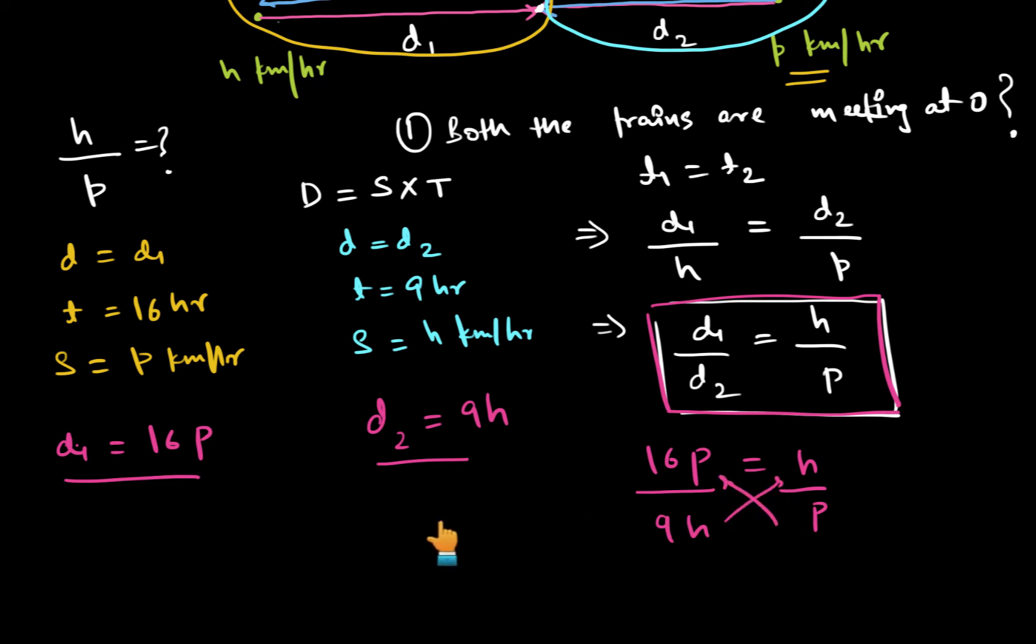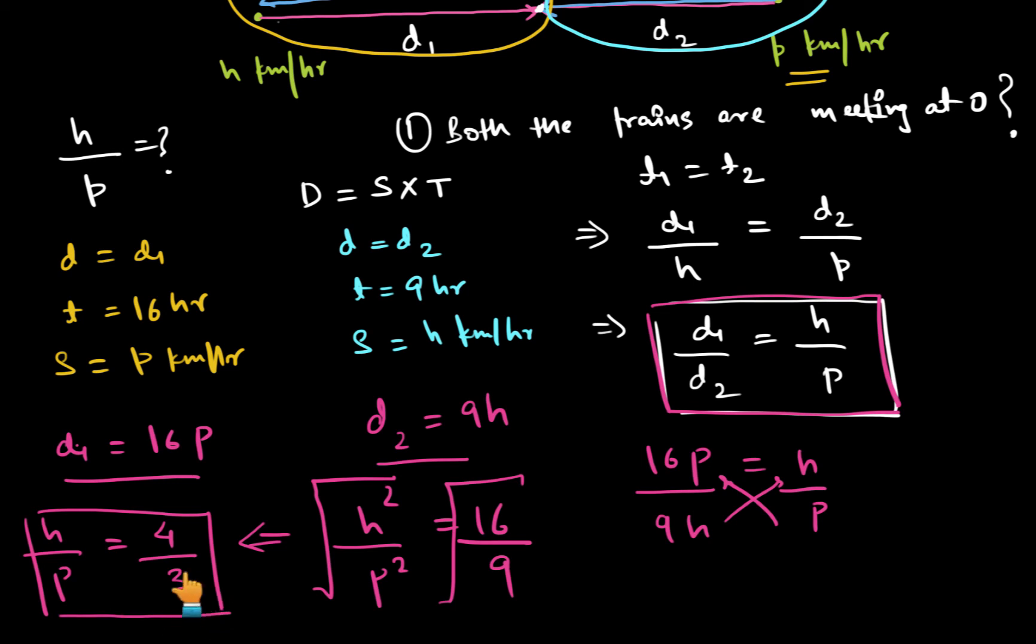On cross multiplication, we will get H square upon P square. H square upon P square is 16 upon 9. Which means taking square root, principal square root on both the sides, we can write H upon P as 4 is to 3. This was the ratio that we were looking for. The ratio of the speed of the train that started from H to the ratio of the speed of the train that started from P is 4 is to 3.